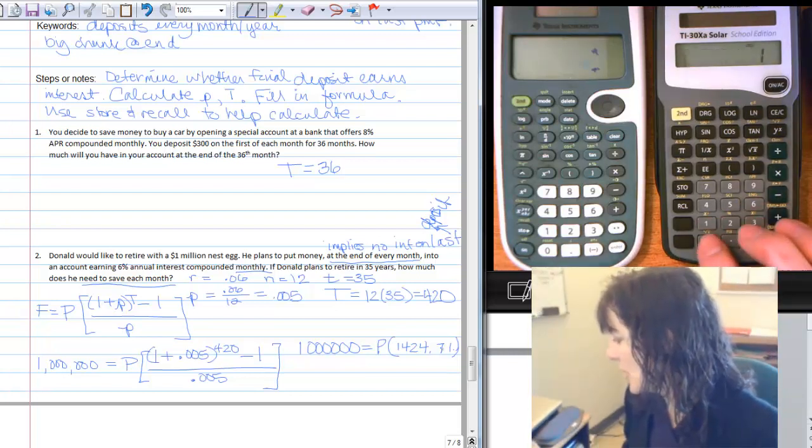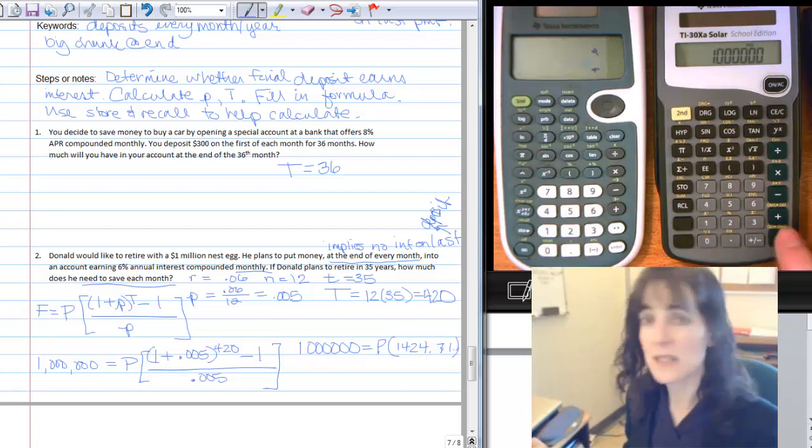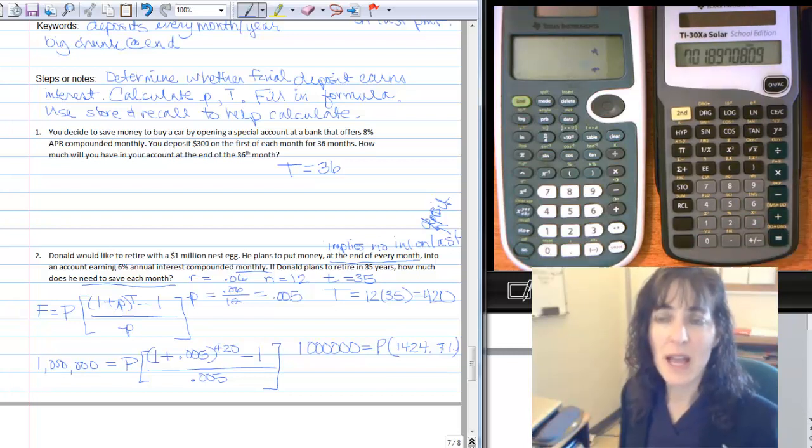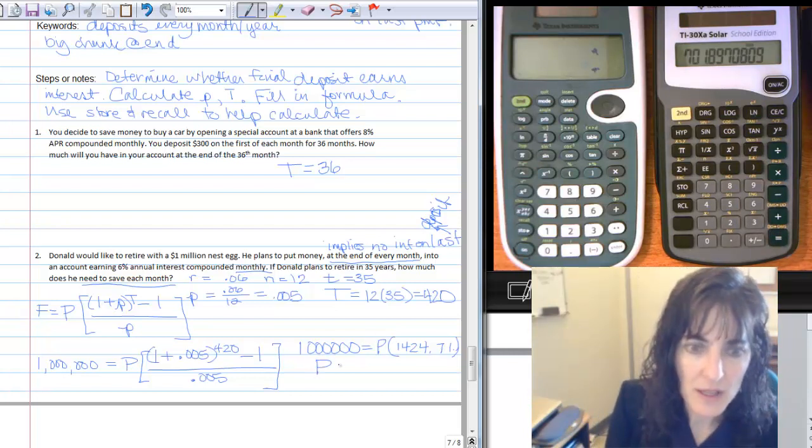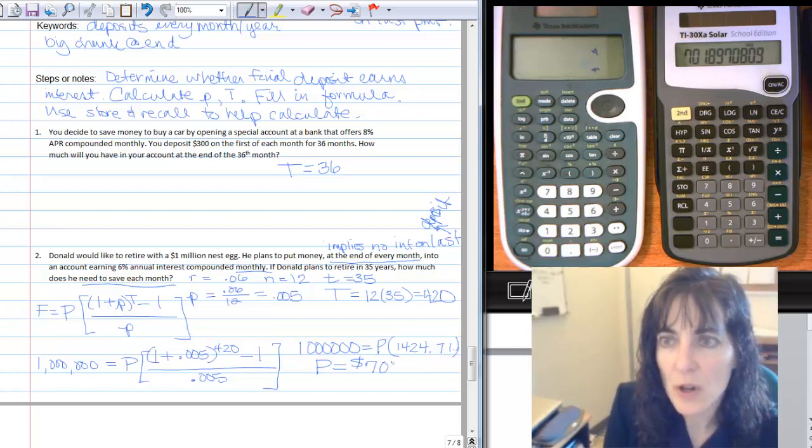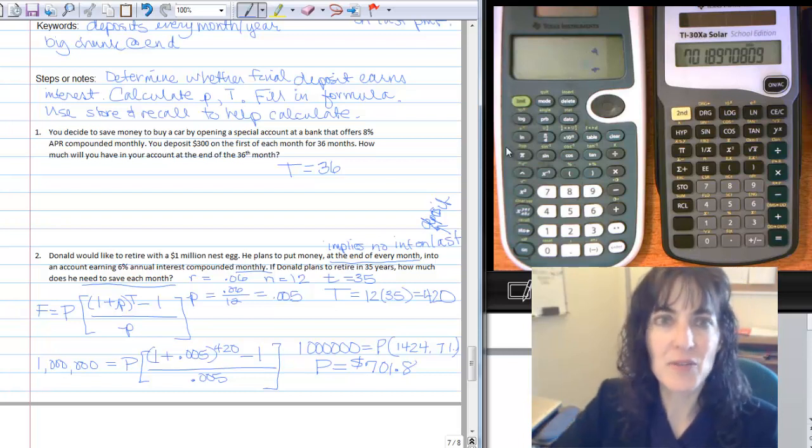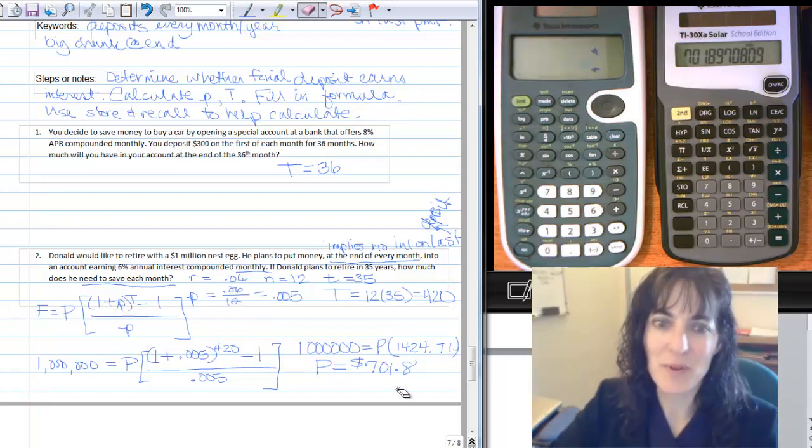By 1, and 1, 2, 3, 4, 5, 6 zeros, and I get a number P is equal to $701.89.7, so I'm going to have to round that one to 90.